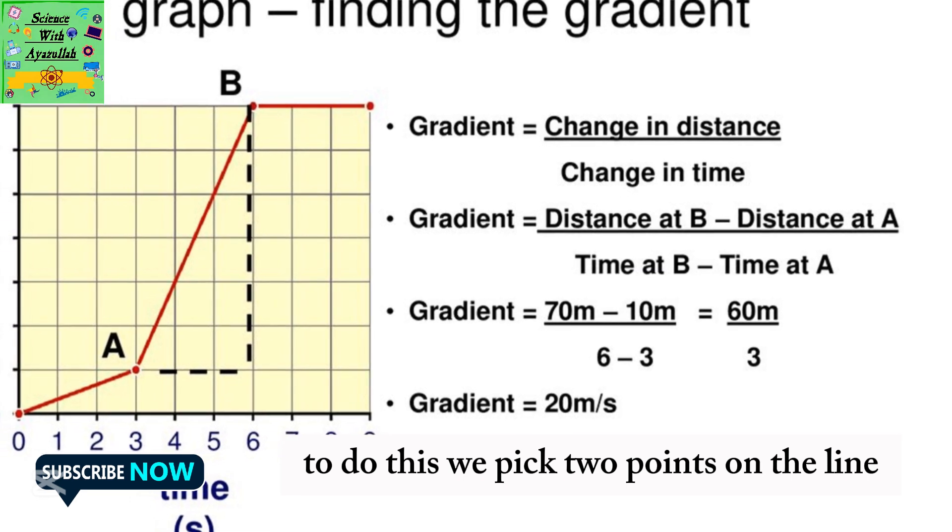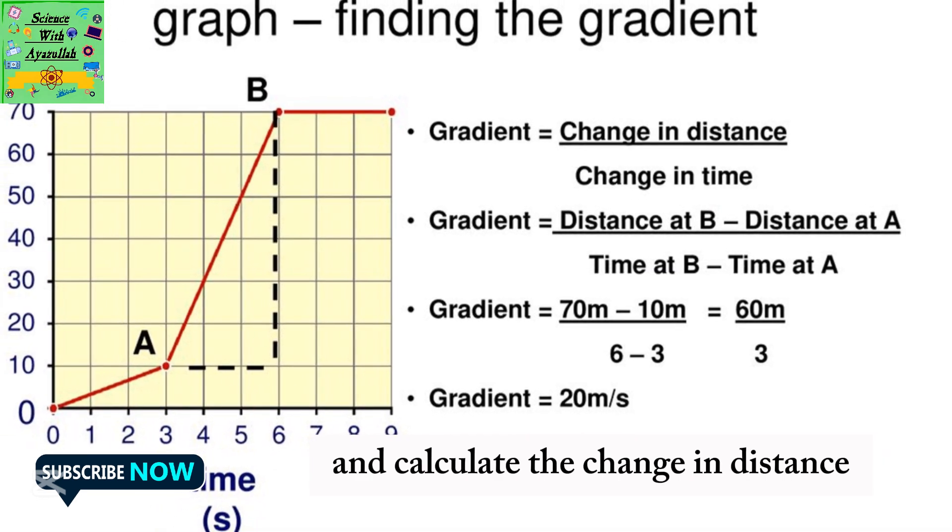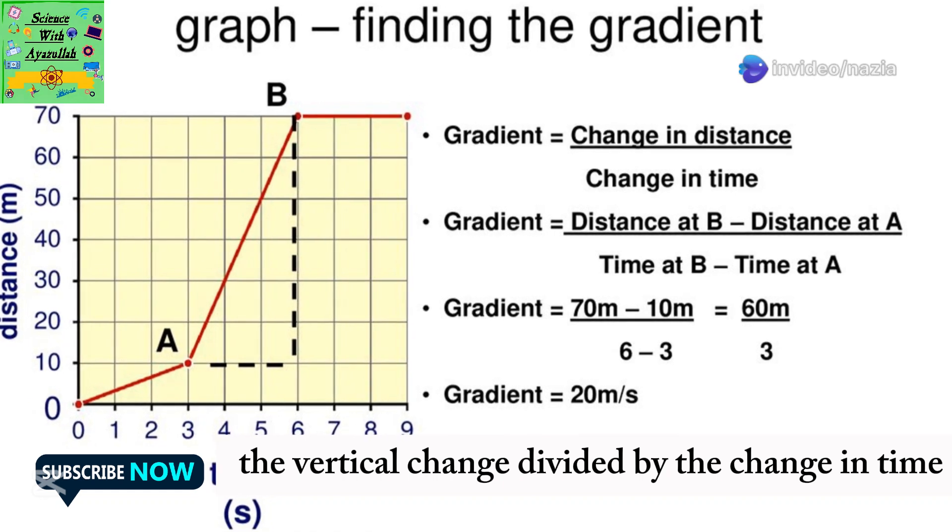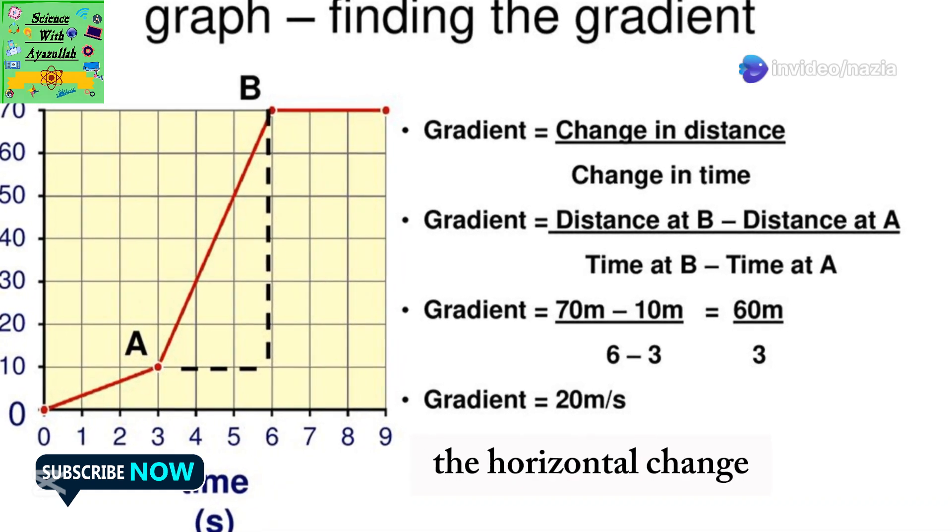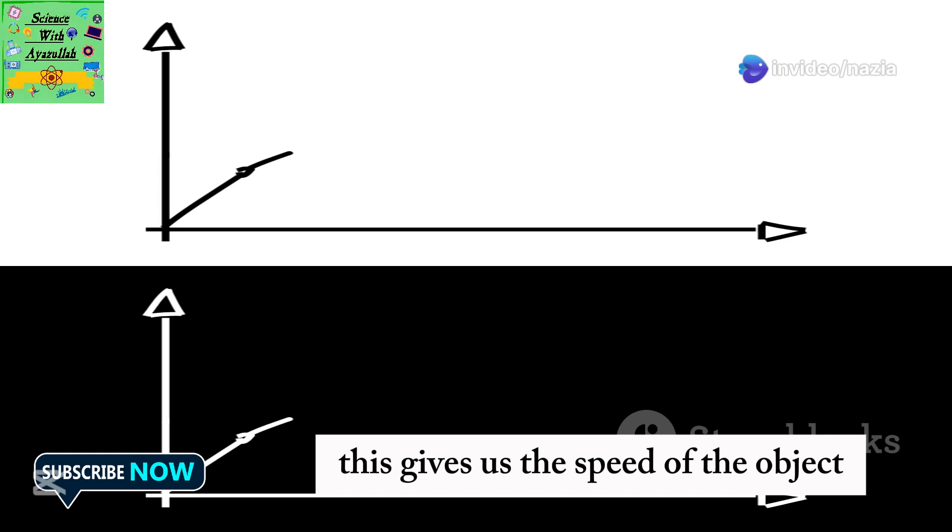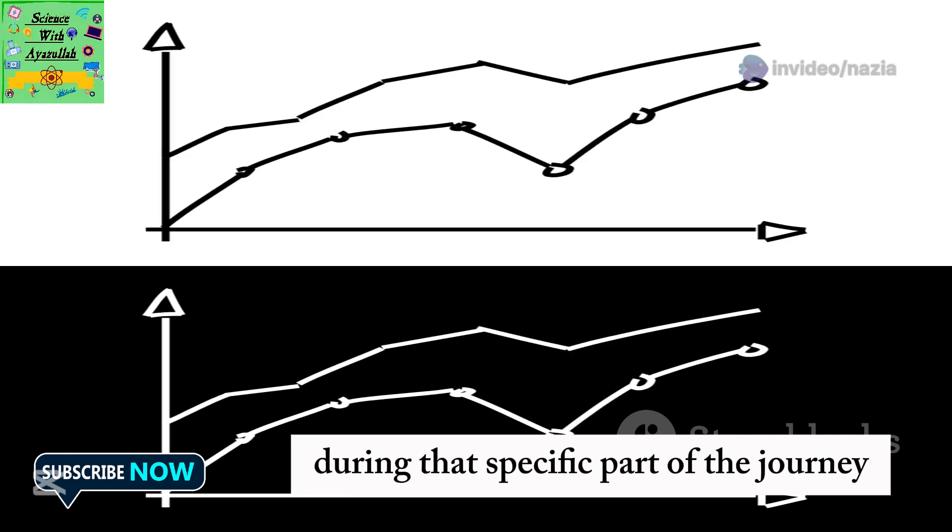To do this, we pick two points on the line and calculate the change in distance, the vertical change, divided by the change in time, the horizontal change. This gives us the speed of the object during that specific part of the journey.